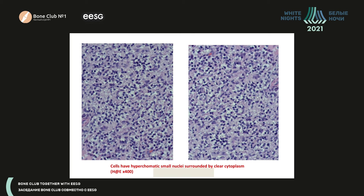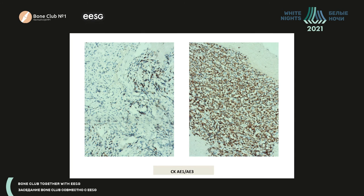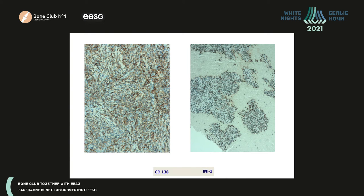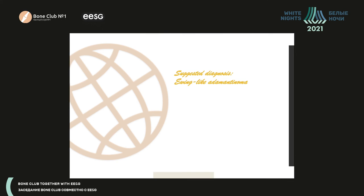The tumor is kind of monotonous — all cells are of a similar type. Immunohistochemistry with antibodies showed significant positive expression on reaction with cytokeratin cocktail using various cytokeratins. CD138 is also positive in this case, which is not entirely clear. EMA was also partially expressed — partially on nuclei and partially in tumor cell cytoplasm. The suggested diagnosis was Ewing-like adamantinoma.